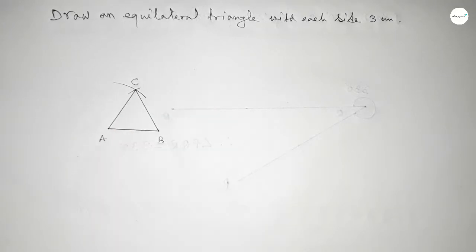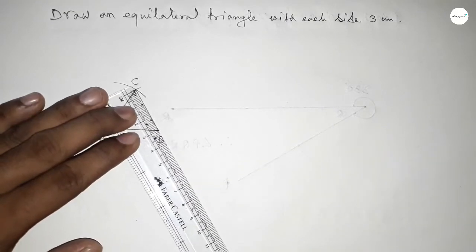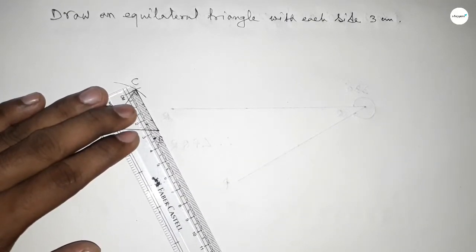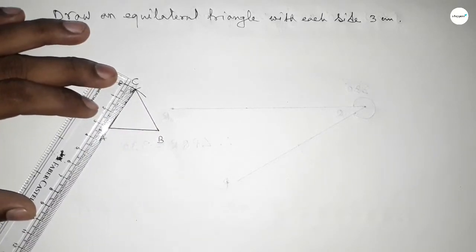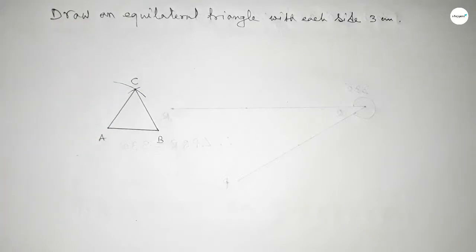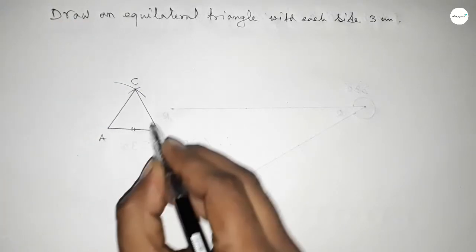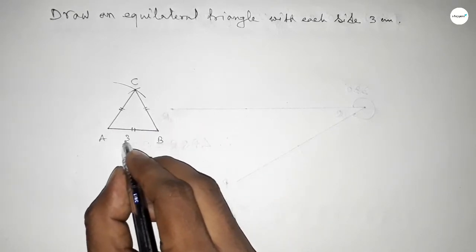So this is C point. Now checking all the sides - this is 3 centimeter, this is also 3 centimeter, and this is also 3 centimeter. So now mark equal sign on 3 sides.